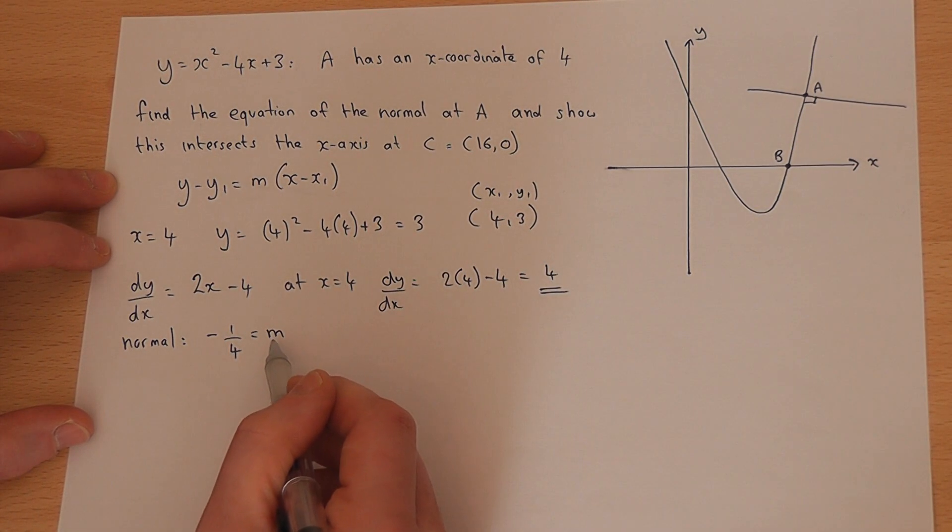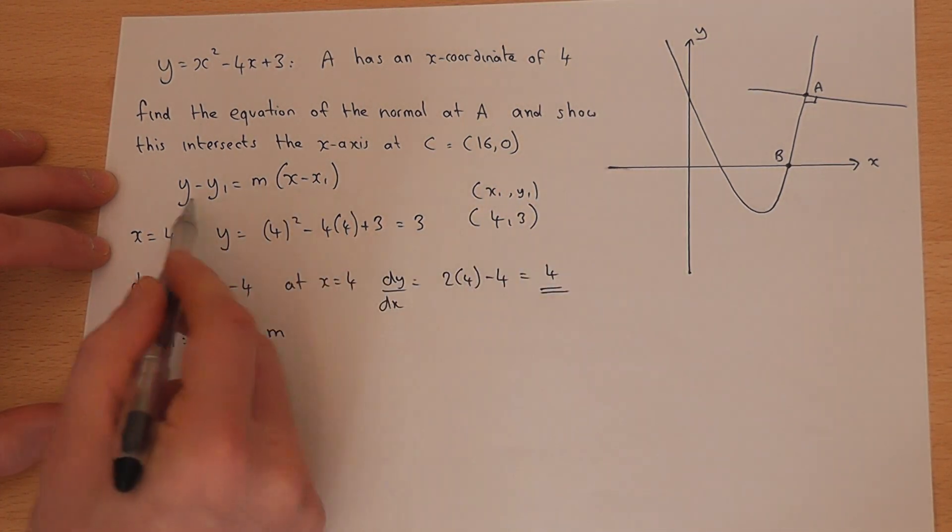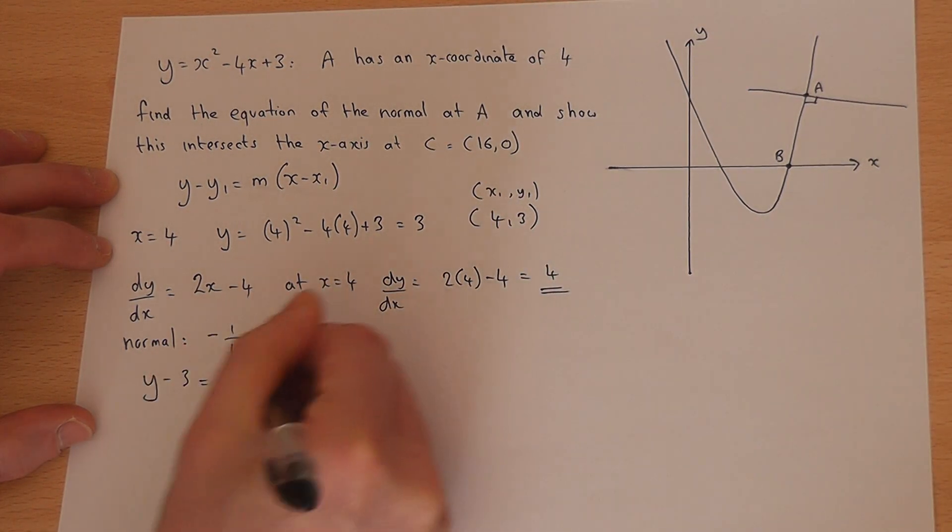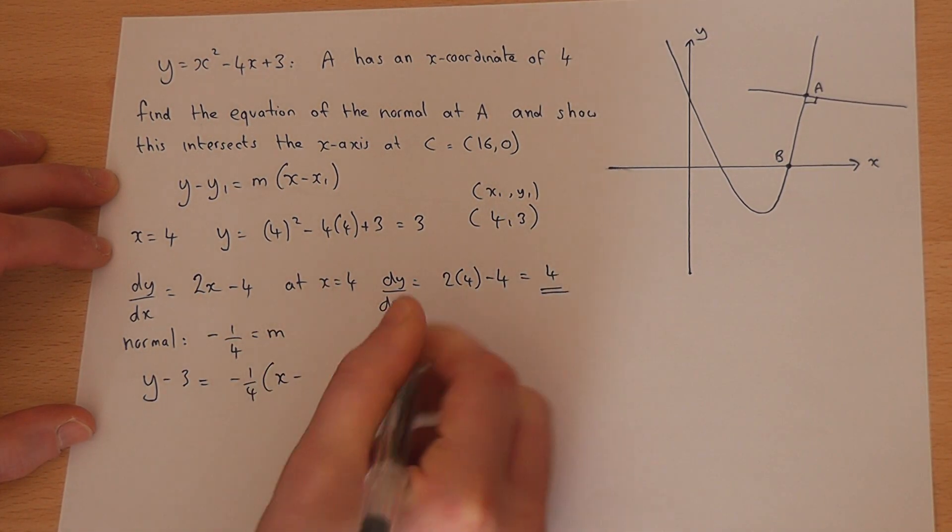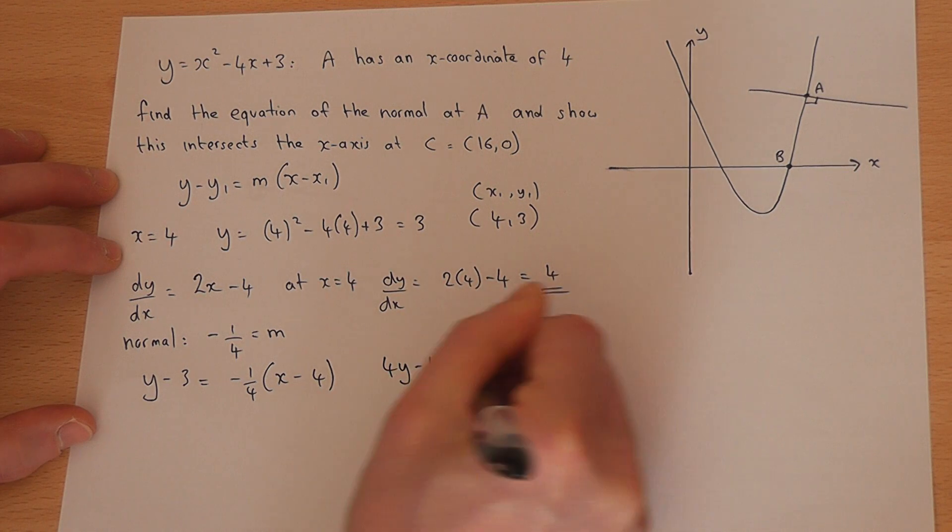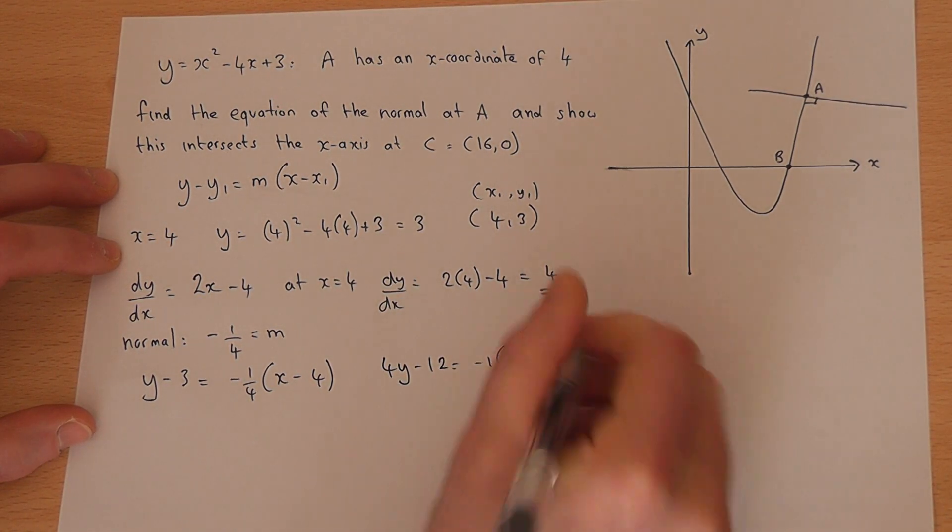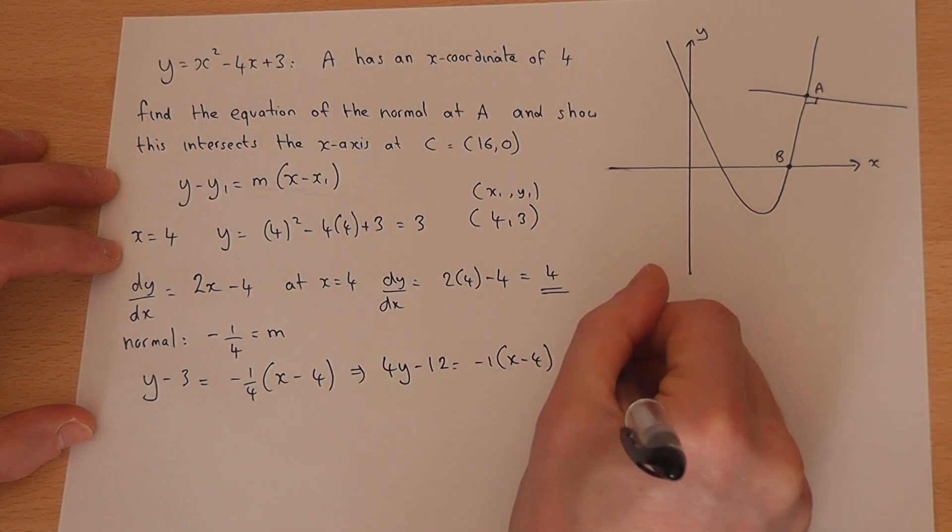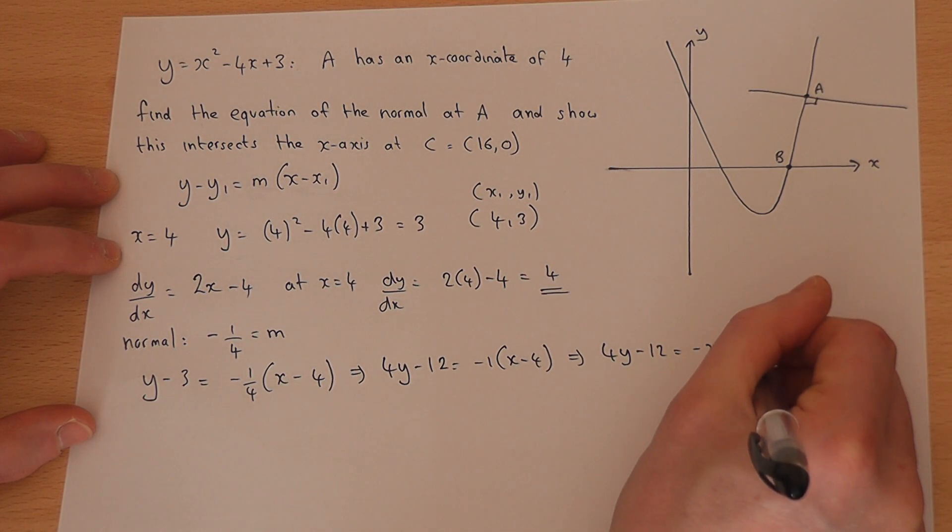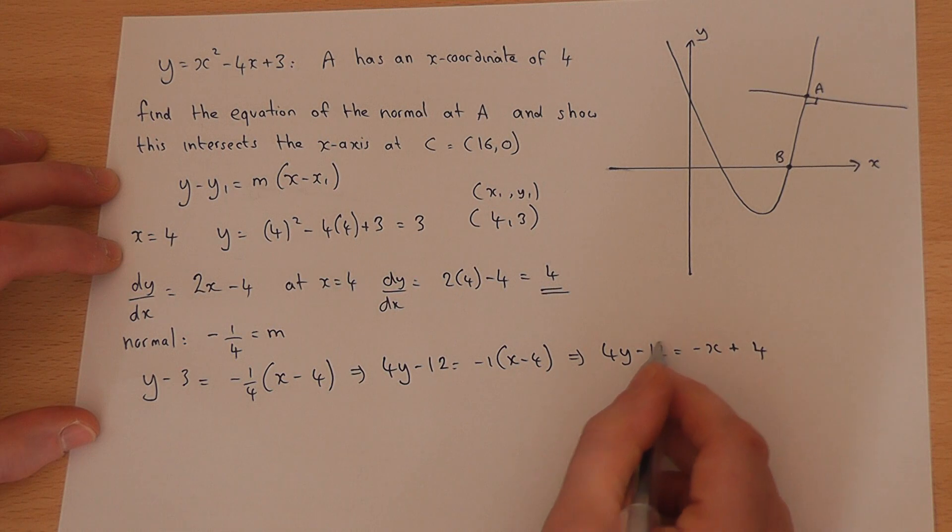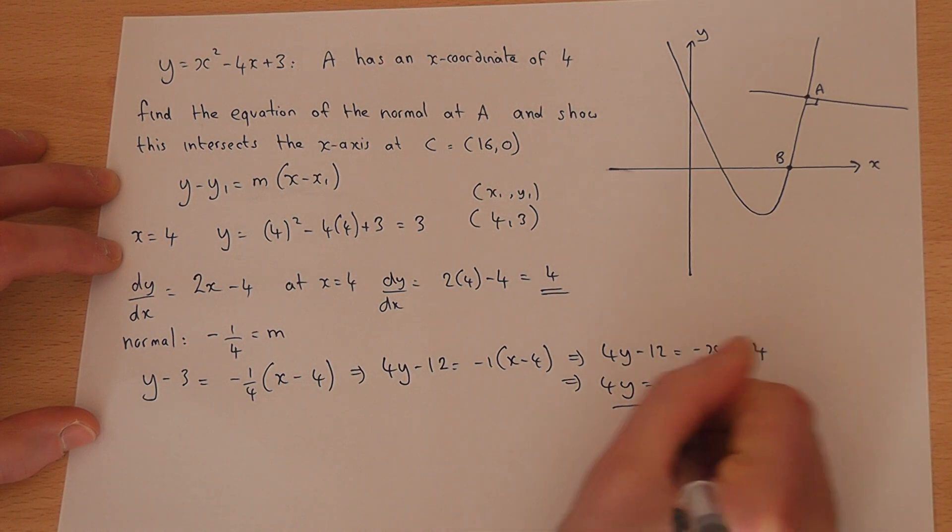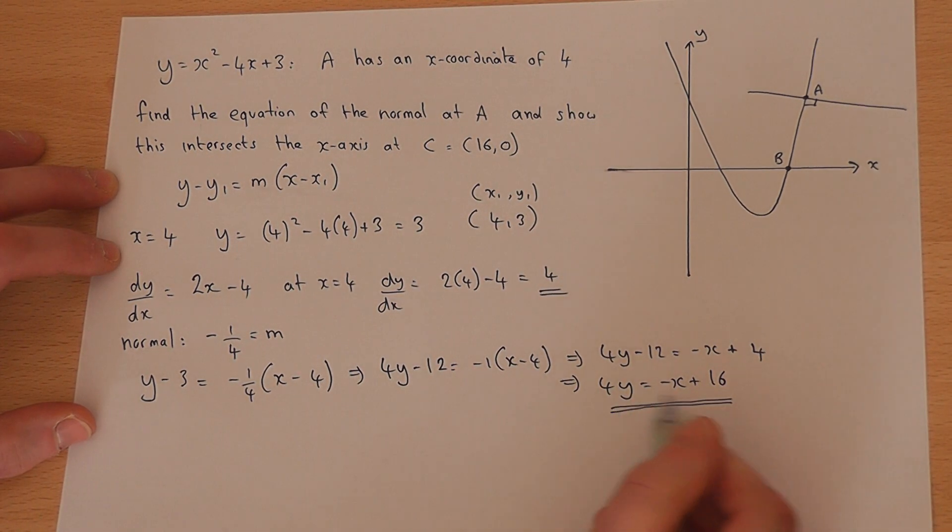We know a coordinate and the gradient, so we can substitute these values into the general equation: y - y₁ = m(x - x₁). Multiplying by 4: 4y - 12 = -1(x - 4). Expanding the bracket gives -x + 4. Adding 12: 4y = -x + 16.